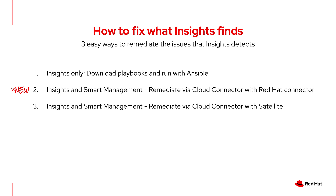The third way is to use Cloud Connector with Satellite. This connects the satellite to cloud.redhat.com and requires a Smart Management subscription. Fix issues with Insights, then click the Execute Playbook button. The playbook is transferred to the satellite, onto the capsule, then run with Ansible Remote Execution using the capsule. These are the three ways to easily patch and remediate risks both with and without satellite.